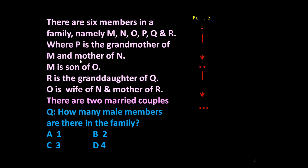P is the grandmother of M and mother of N, so P, N, and M are related across three generations — first generation, second generation, and third generation. Similarly, you can draw the family tree. Next, M is the son of O.